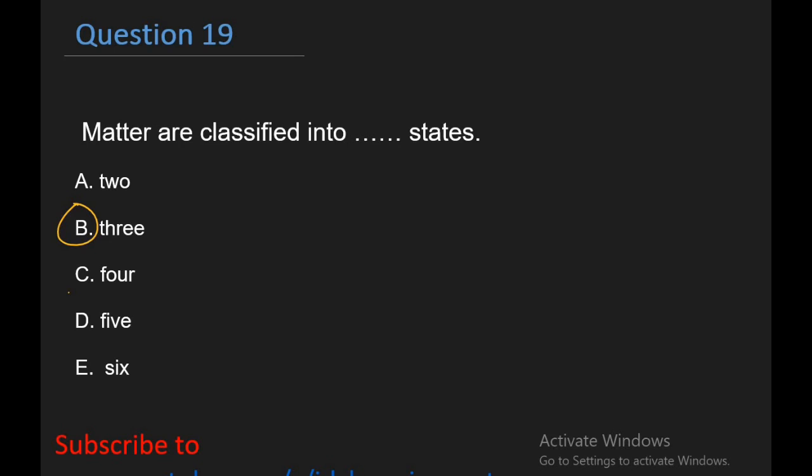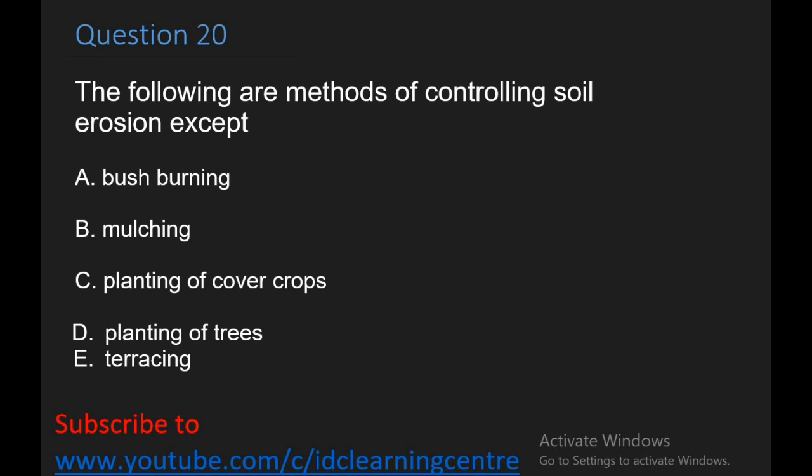Question 19: Matter are classified into three states, which is simply solid, liquid and gas. Question 20: The following are methods of controlling soil erosion except A. Bush burning, B. Mulching, C. Planting of cover crops, D. Planting of trees, E. Terracing. The right answer for question 20 is bush burning. Bush burning can cause the soil to lose its ability to absorb and retain water. So that means bush burning is definitely the answer.